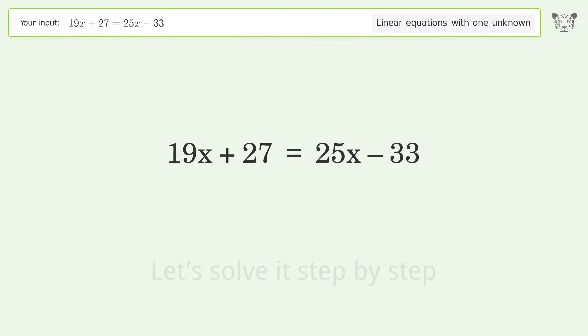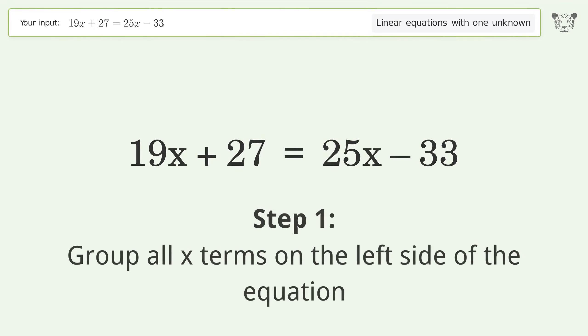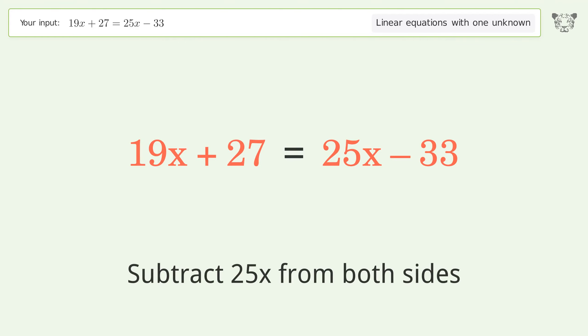Let's solve it step by step. Group all x terms on the left side of the equation. Subtract 25x from both sides.